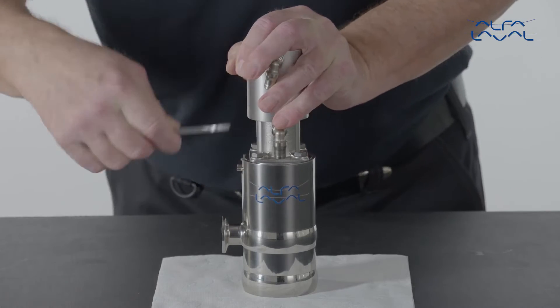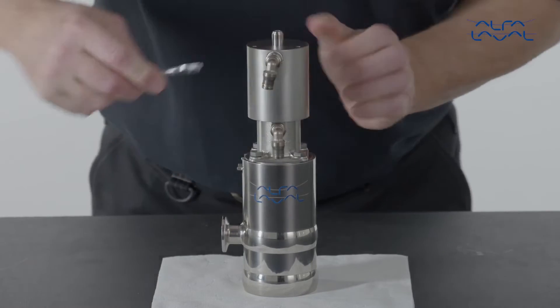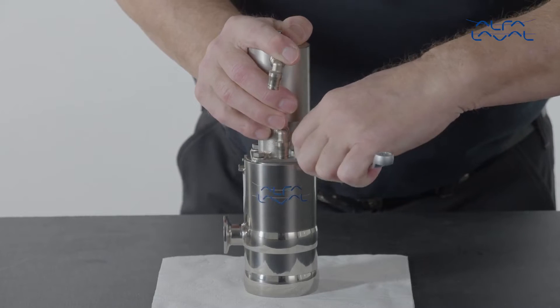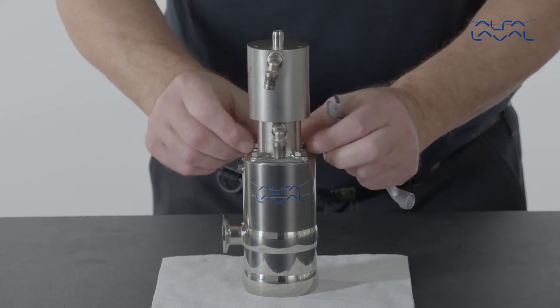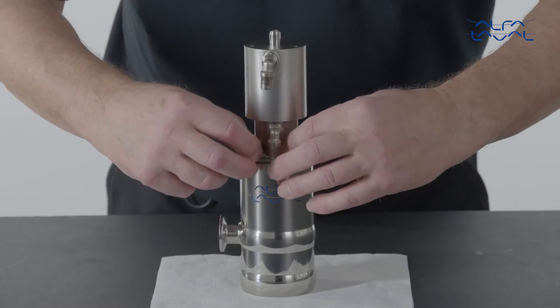Start by placing a soft cloth under the Alfa Laval PlusClean assembly to prevent it from getting scratched. If there is an actuator mounted onto the PlusClean, you should begin by removing the actuator.